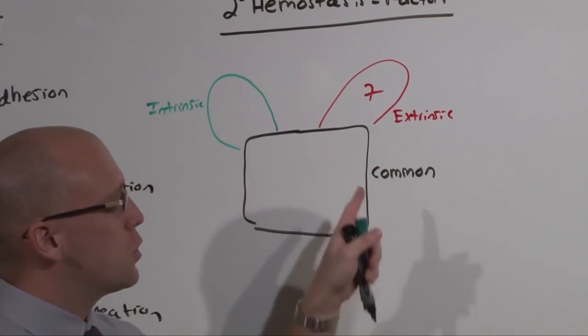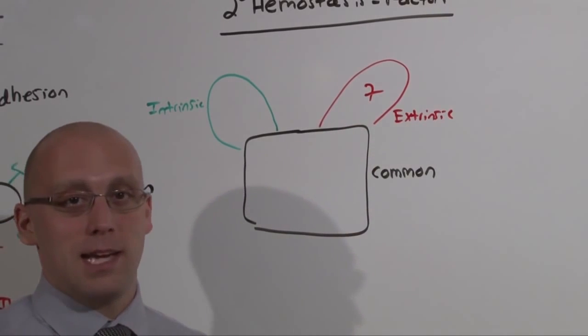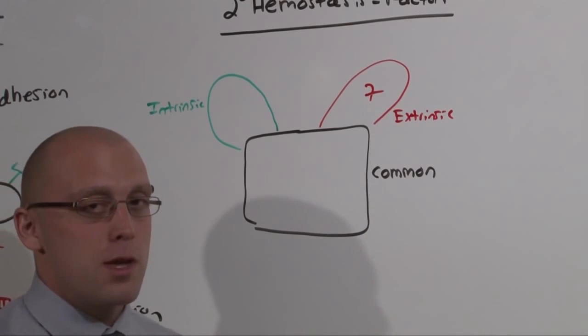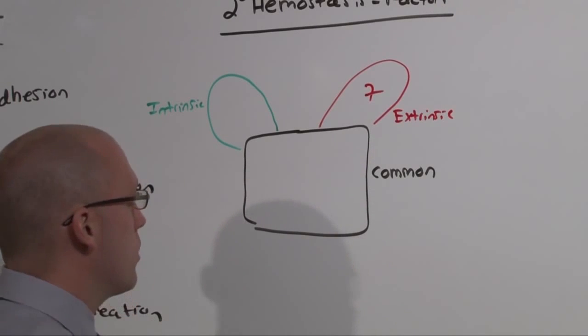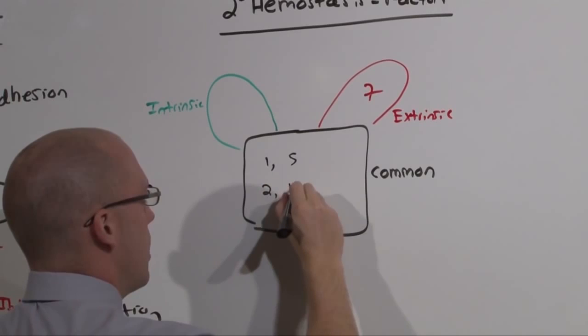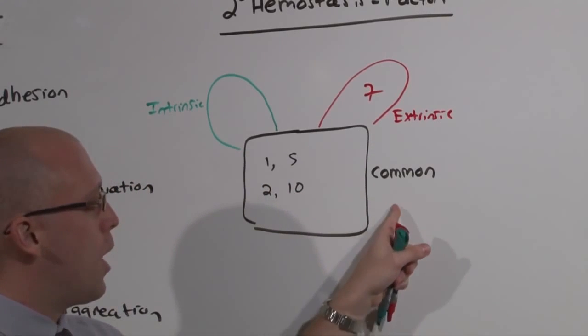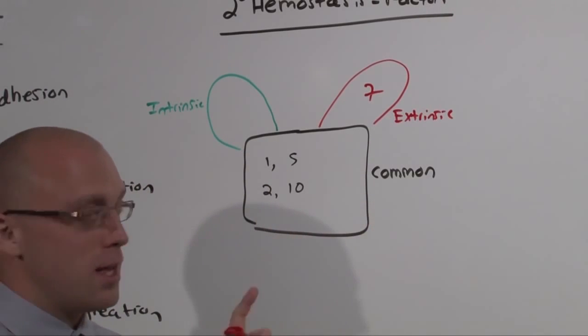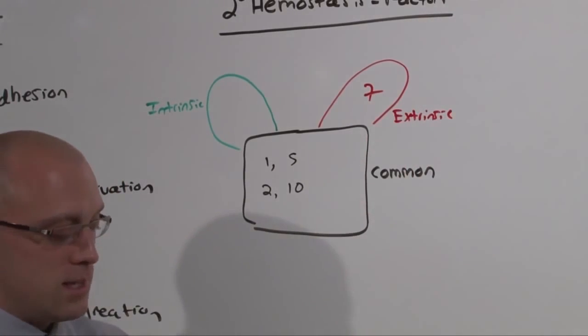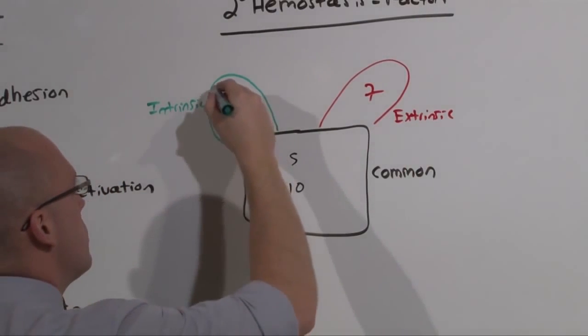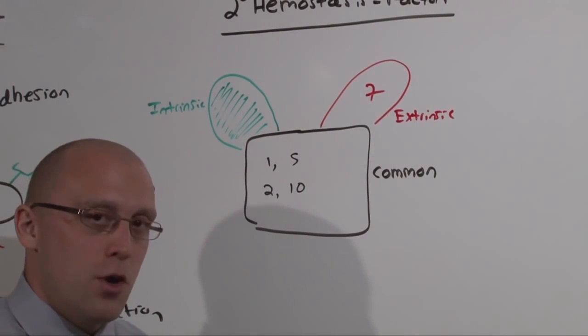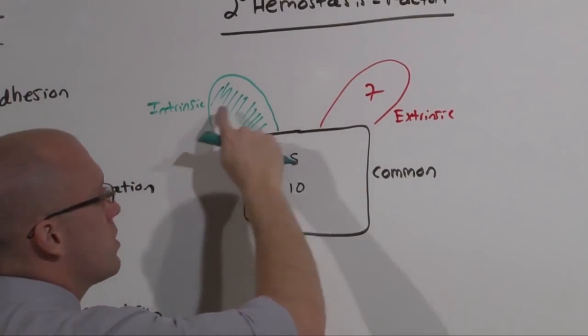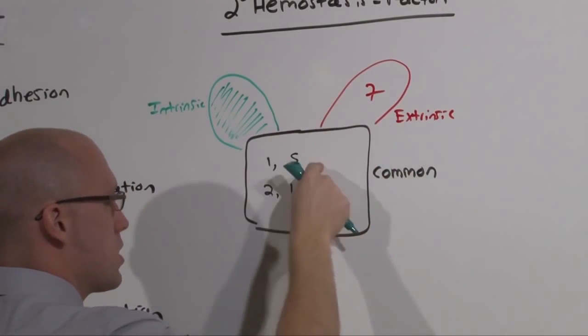The extrinsic pathway is exclusive. You just have to remember factor 7 is in the extrinsic pathway. The common pathway can be remembered by 1-5-in-5, 2-5s-in-10. There is 1 five in 5 and there are 2 fives in 10. If you know the common pathway is 1-5-in-5, 2-5s-in-10, and the extrinsic pathway is exclusive with 7, it means the intrinsic pathway is everything else. You just have to know that factor 10 bridges the intrinsic and extrinsic into the common pathway.